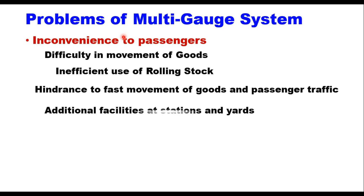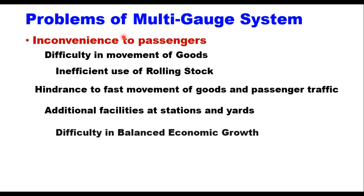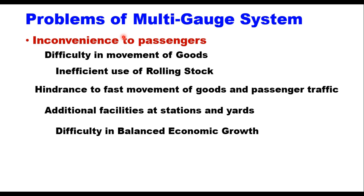Additional facilities are required at stations and yards — costly sheds and other facilities are required for handling large volumes of goods at junction points. Duplicate equipment like yards and engines for handling goods from two gauges must be provided at junction points. Furthermore, differences in gauge lead to unbalanced economic growth, because industries set up near meter gauge or narrow gauge stations cannot send their goods economically and efficiently to areas served by broad gauge stations.